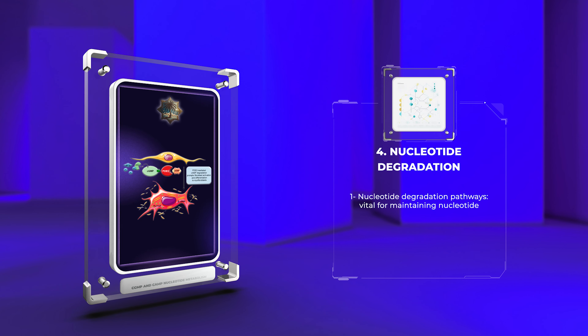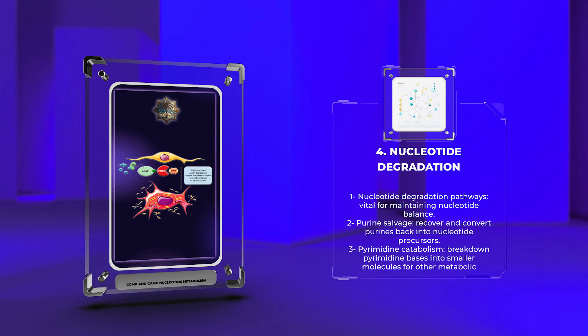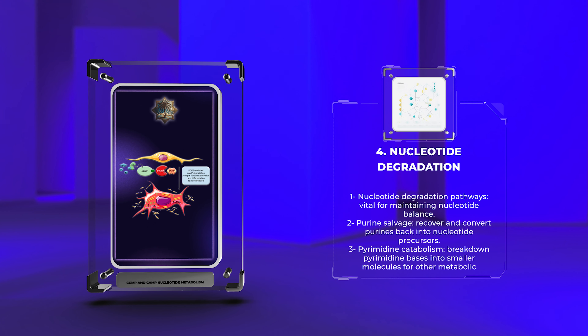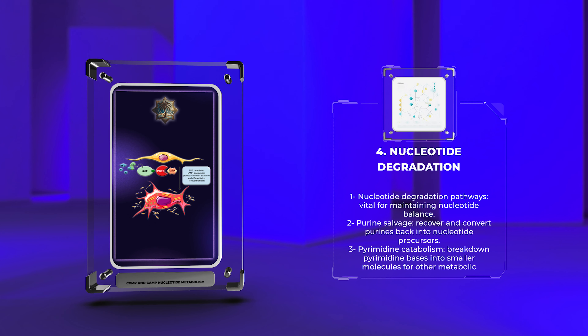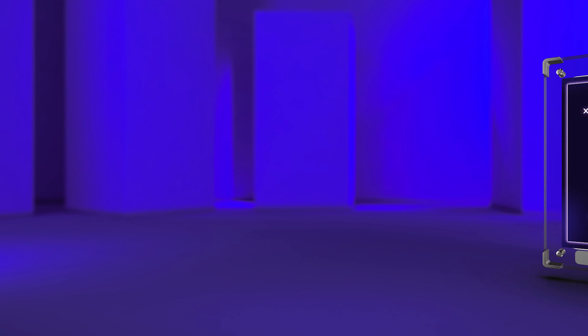To maintain nucleotide balance, the degradation of nucleotides is an equally vital process. Nucleotide degradation pathways, such as purine salvage and pyrimidine catabolism, ensure the recycling of nucleotide components. In purine salvage, enzymes recover and convert purines back into nucleotide precursors. In pyrimidine catabolism, pyrimidine bases are broken down into smaller molecules, like beta-alanine and beta-aminoisobutyrate, which can be utilized in other metabolic pathways.